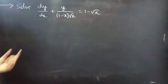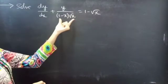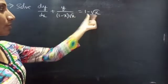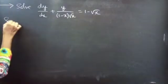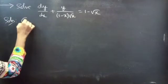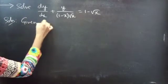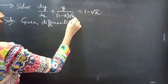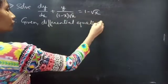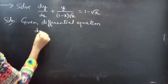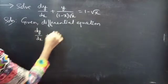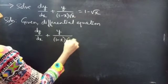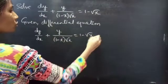Problem. Solve dy/dx plus y divided by (1 minus x) times square root of x, equals 1 minus square root of x.